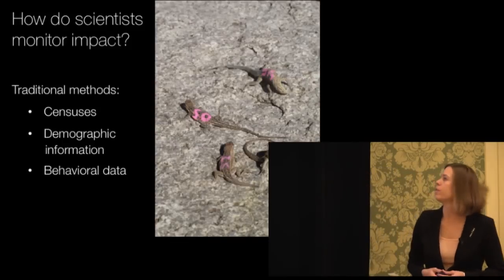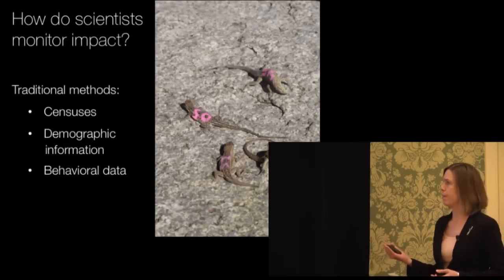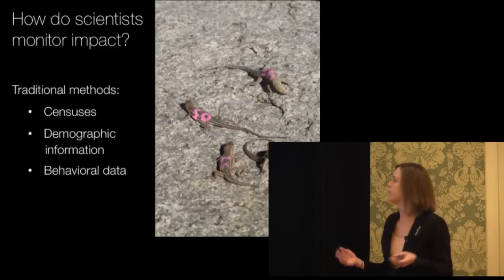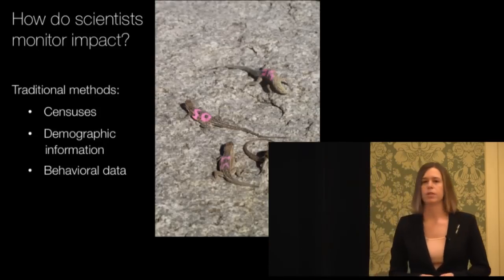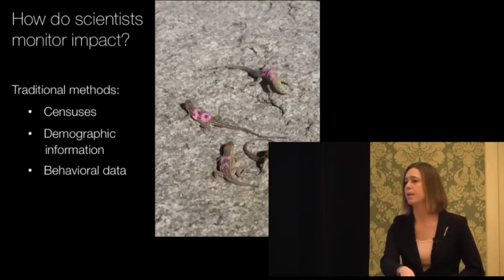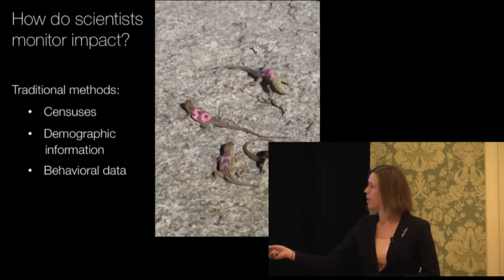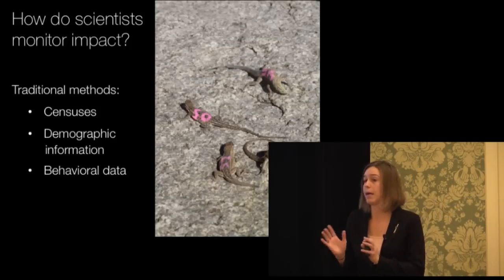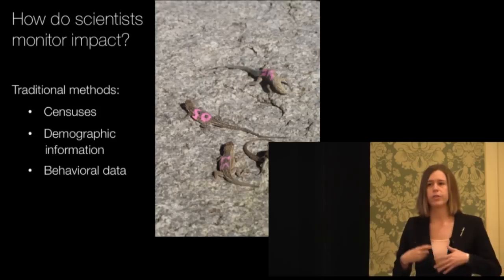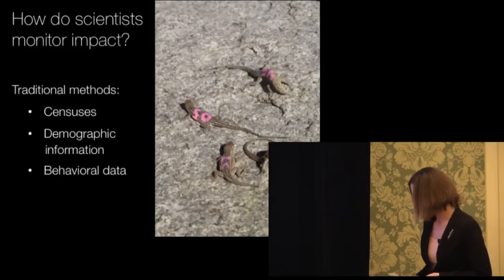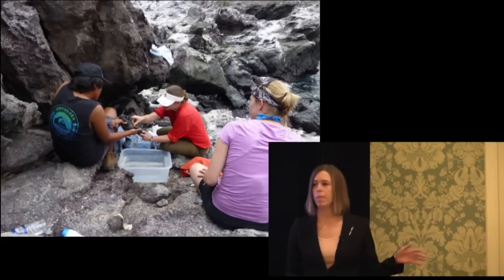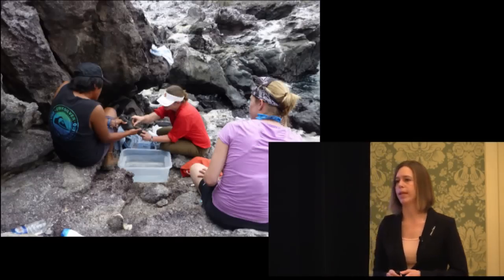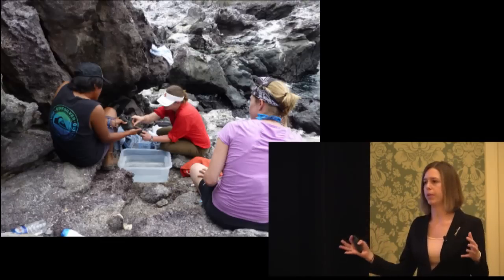So how do you monitor this sort of thing? Well, traditionally, scientists monitor impact using synthesis. They'll go out and count the number of individuals in a population to see how big that population is, collect demographic information — how many females, how many males, how many offspring are in that population — or look at behavioral responses of individuals. In my laboratory, we're using, in addition to these traditional methods, a more physiological approach. We're focusing on individuals in that population and what varies among those individuals, not just the population as a whole.